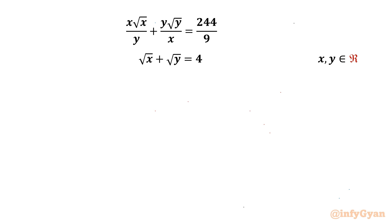Welcome to Infigyan friends. In this video we will be solving one very interesting question on system of equations. The given equations are: x√(x/y) + y√(y/x) = 244/9, and √x + √y = 4, where x and y belong to real numbers.